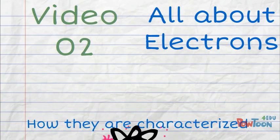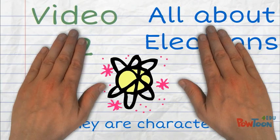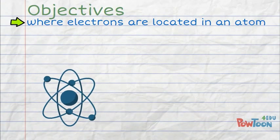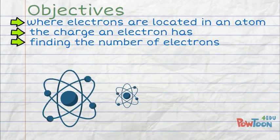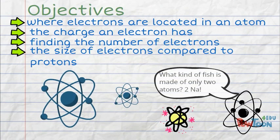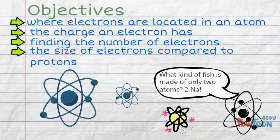Video 2: All About Electrons, How They Are Characterized. Here are your objectives for your notes: where electrons are located in an atom, the charge an electron has, finding the number of electrons, and the size of electrons compared to protons.